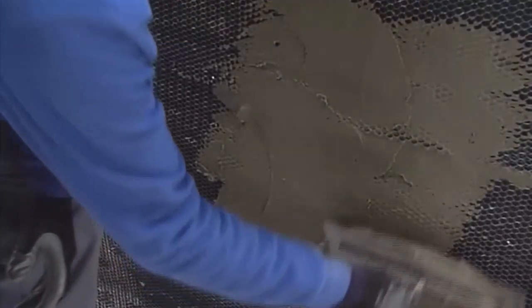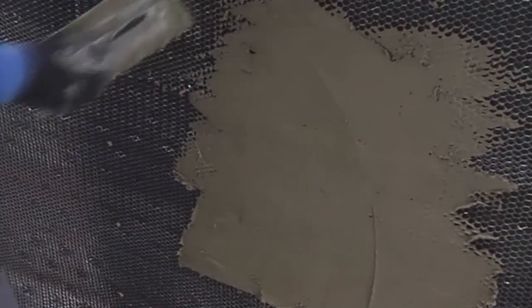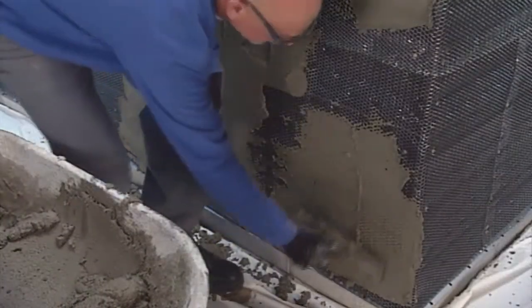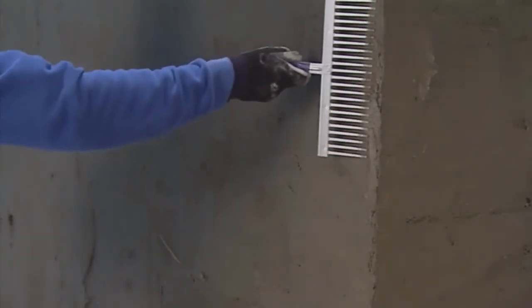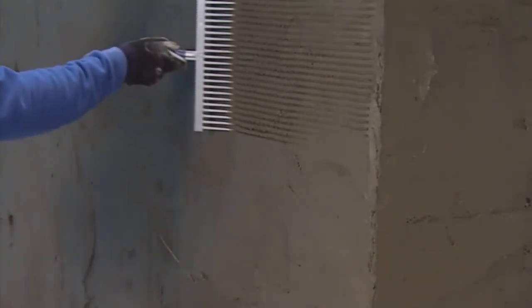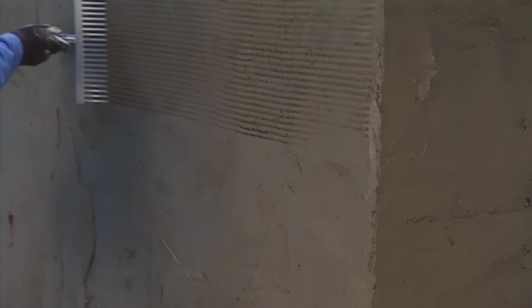If using a scratch coat, apply it to the metal mesh by trowel using enough force to key the mortar into the openings. The scratch coat should be about 12-18mm thick. When the mortar begins to firm up, cross scratch the surface using a stucco scratch coat rake. Curing time for the scratch coat will vary depending on weather conditions.